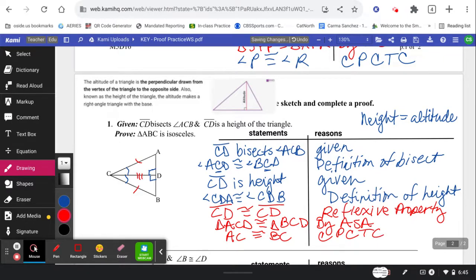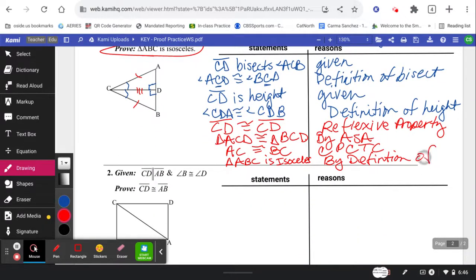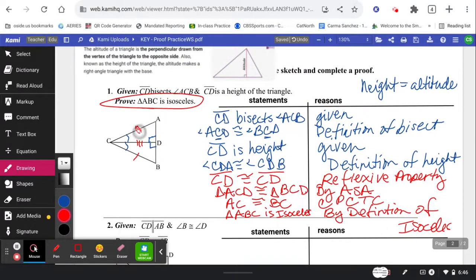And then finally, I can state our proof statement. Triangle ABC is isosceles by definition of isosceles. By the way, do you know what an isosceles is? It's a triangle with these two sides congruent. So that's why we had to prove that those two sides were congruent in order to say that it was isosceles.